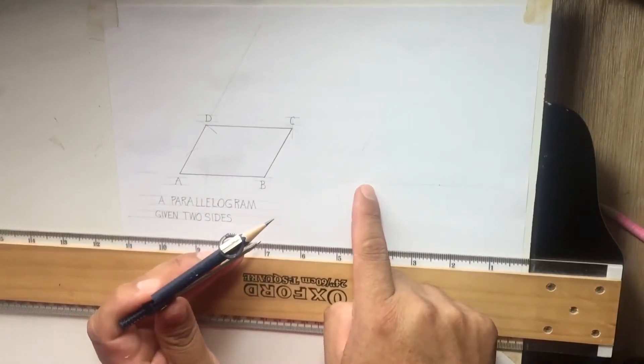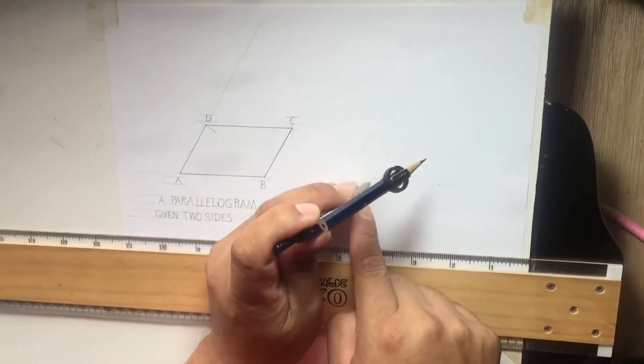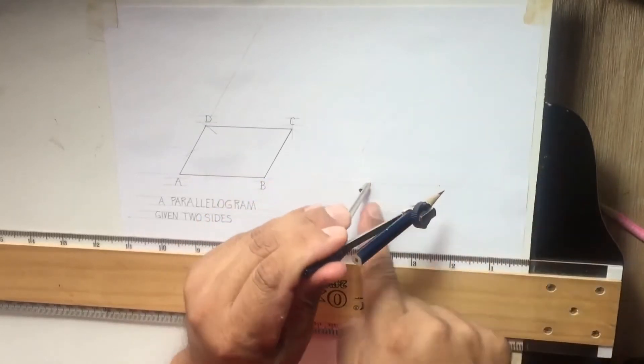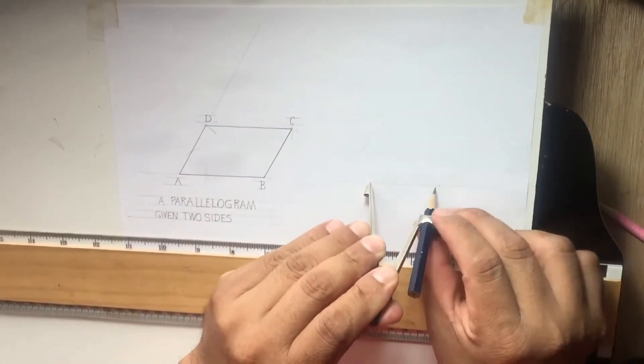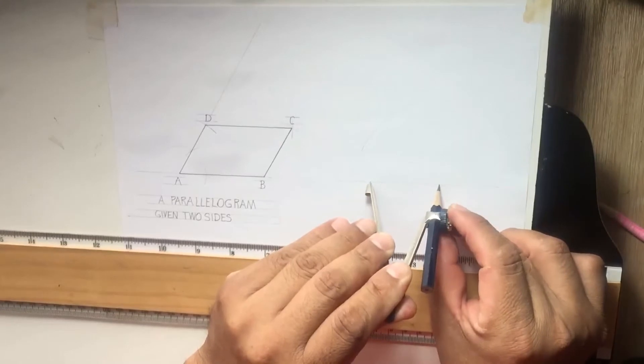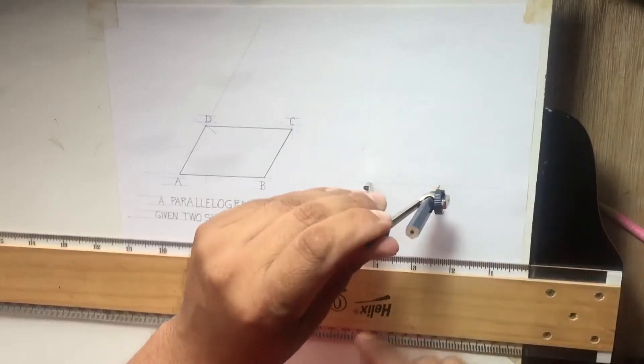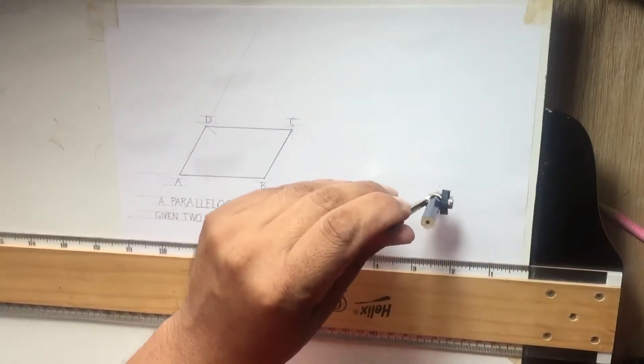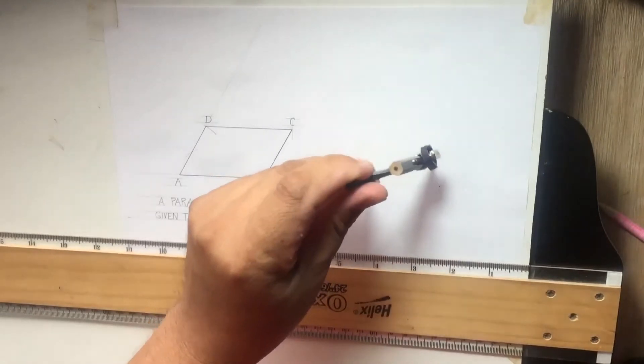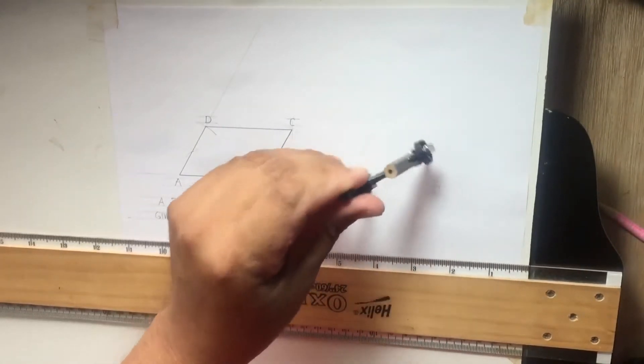I want now to position my compass at this point, which is the first point, and open to radius 45, okay, which is the length of one side. Once I've established that distance I want to scribe an arc to intersect the diagonal.